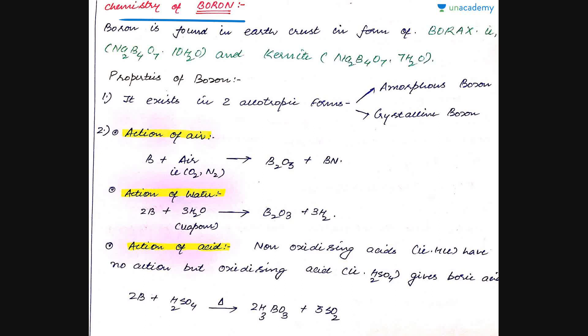Before moving on to the compounds of boron, let us study the properties of boron. Boron is found in the earth's crust in the form of borax, Na2B4O7·10H2O, and kernite, Na2B4O7·4H2O. It exists in two allotropic forms: amorphous boron and crystalline boron.